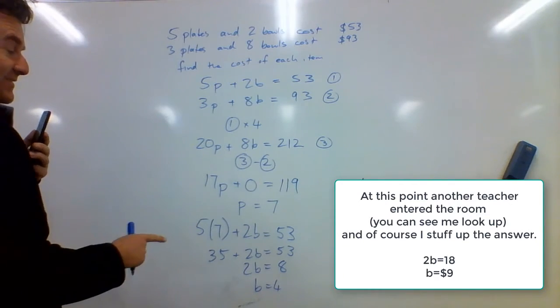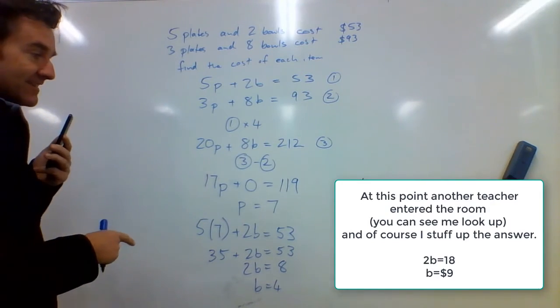So that means the price of the bowls is $4 and the price of the plates is $7.